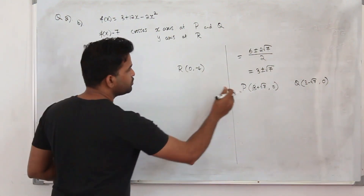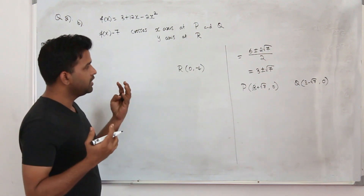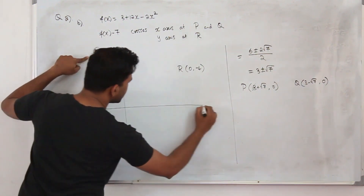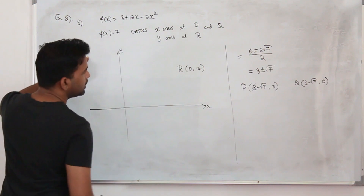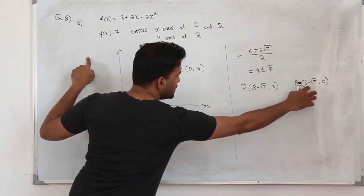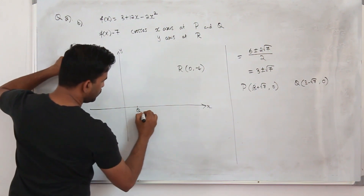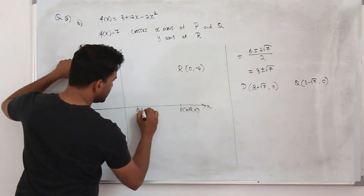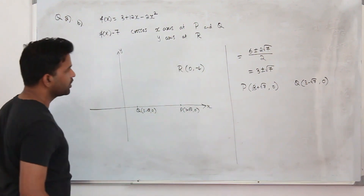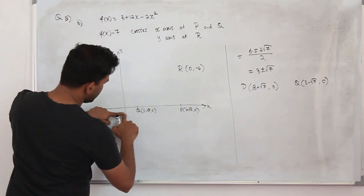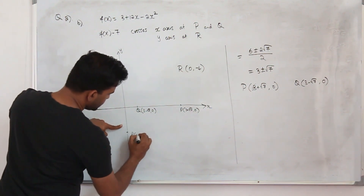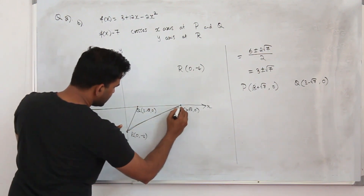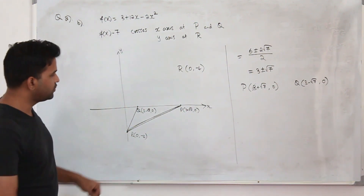We have three points P, Q, R, and need the area of triangle PQR. Plotting on the xy-plane: Q = (3 - √7, 0), P = (3 + √7, 0) on the x-axis, and R = (0, -4) below the origin.